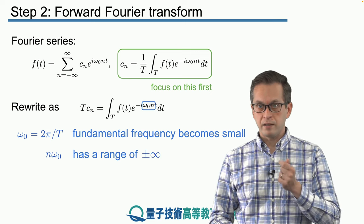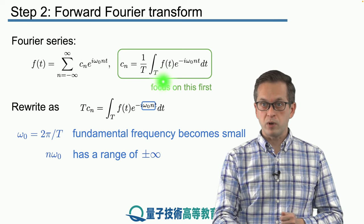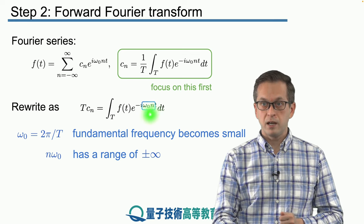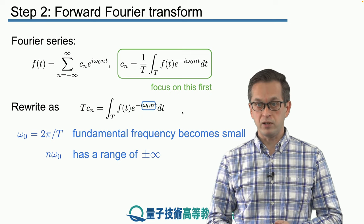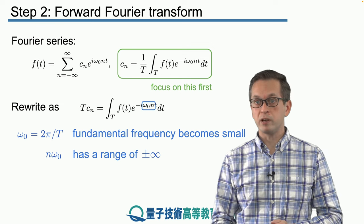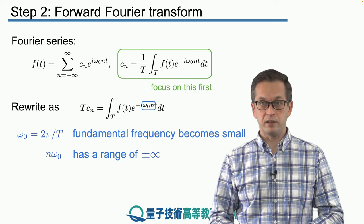So does that mean that the exponential vanishes? No, it doesn't. Because what we're doing is we are multiplying by this n. And n is an integer ranging from minus infinity all the way to plus infinity. So the product of n times omega naught still ranges from minus infinity to plus infinity.